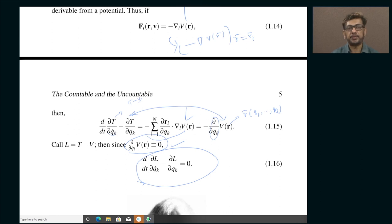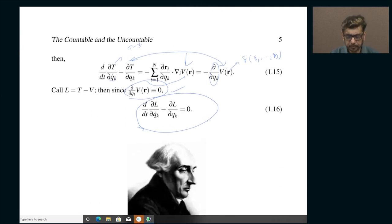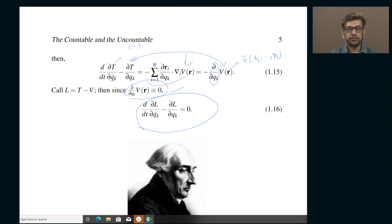I hope you have understood what Lagrangian mechanics is. In any case, this was supposed to be a prerequisite, but I hope I have succeeded in refreshing your memory. I am going to stop here, and in the next class I am going to continue the description of point particle classical mechanics through a description of Hamiltonian mechanics. We are going to be using both Hamiltonian and Lagrangian mechanics later on for many applications involving the continuum counterparts of the systems we have just studied.